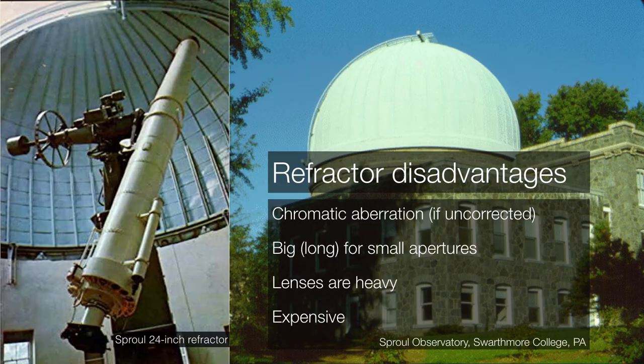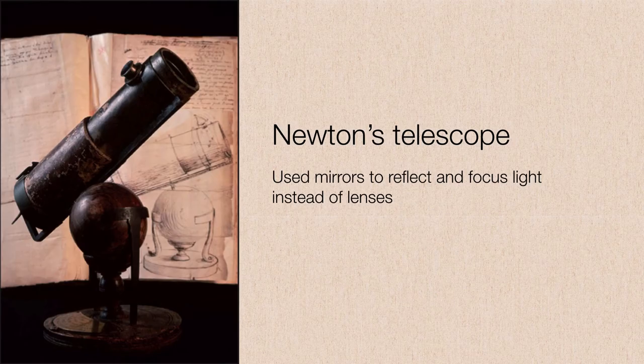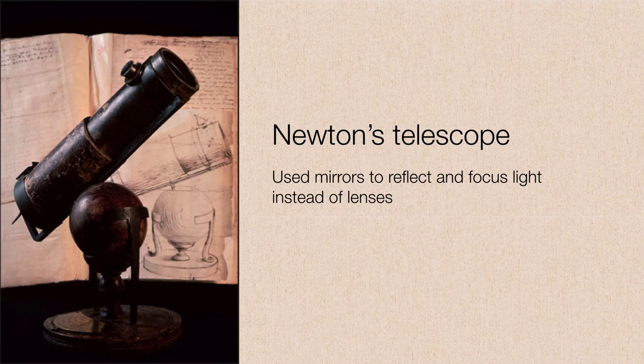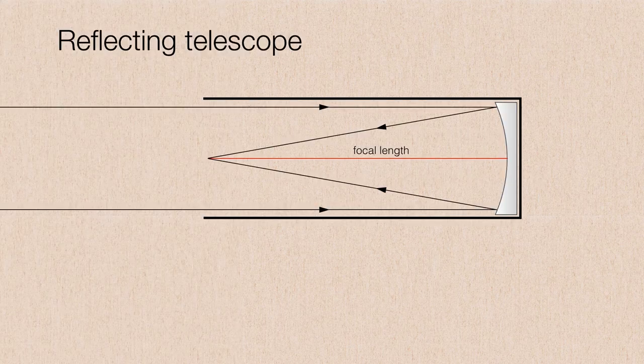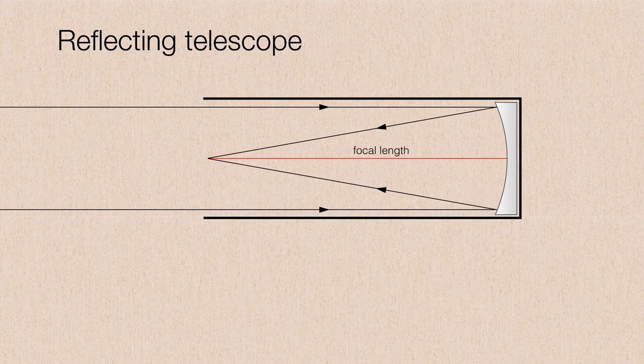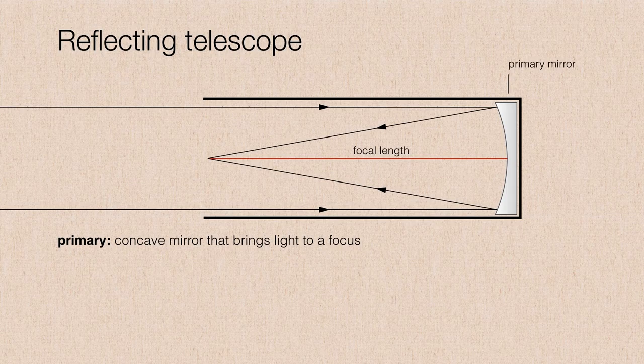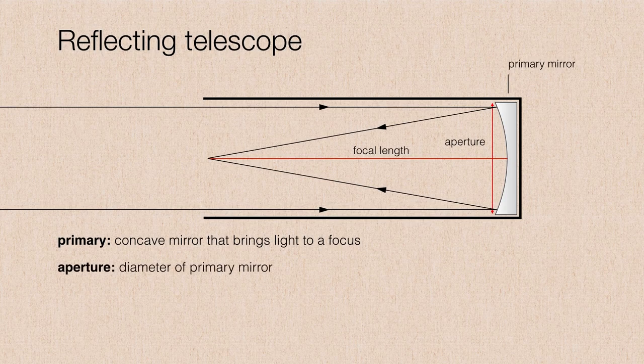Now the problems with refractors were well known as far back as Isaac Newton's time. And Newton himself developed an alternative method of building telescopes, this time using mirrors instead of lenses. And so the reflecting telescope operates this way. There is a primary mirror. And just like we saw with the refracting telescope, its diameter is the aperture.